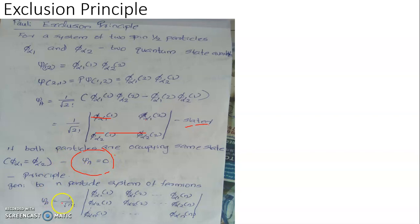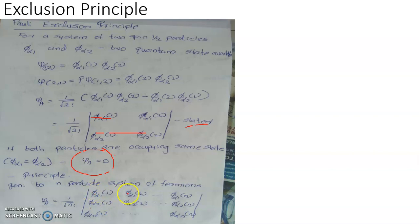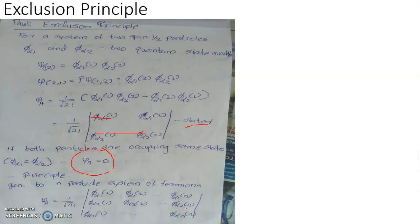This can be generalized for an N-particle Fermion system, where the wave function is written as ψ_A = (1/√N!) times the determinant with elements φ_α1(1), φ_α1(2), ... φ_α1(N) through φ_αN(1), φ_αN(2), ... φ_αN(N). When more than one particle occupies the same quantum state, two rows in the matrix become identical and the determinant vanishes. This gives rise to the Pauli exclusion principle: no two Fermions can occupy the same quantum state.